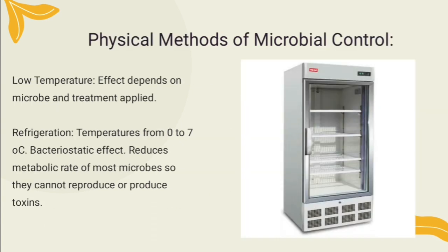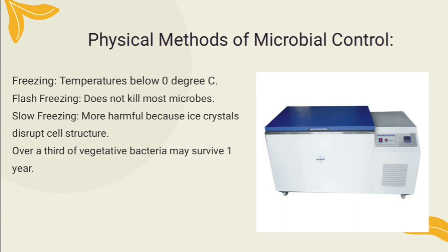Low temperature inhibits microbial growth by slowing down microbial metabolism. Examples include refrigeration and freezing. Refrigeration at 7°C slows the growth of microorganisms and keeps food fresh for a few days — it reduces the metabolic rate so microbes cannot reproduce or produce toxins. Freezing at −10°C stops microbial growth but generally does not kill microorganisms, keeping food fresh for several months. Flash freezing does not kill microbes. Slow freezing is more harmful than flash freezing because ice crystals will disrupt the morphology or cell structure of microorganisms.